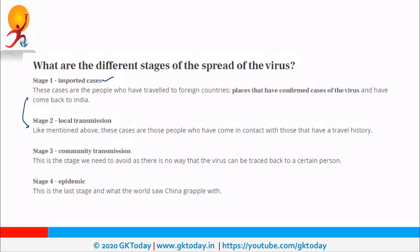The second stage was local transmission. For example, suppose P1 came back from China recently. If P1 interacts with P2, who never visited China or any other infected country, even though P2 has no travel history, P2 may still be infected. So stage 2 is related to local transmission — cases where those who had travel history came in contact with a local person.